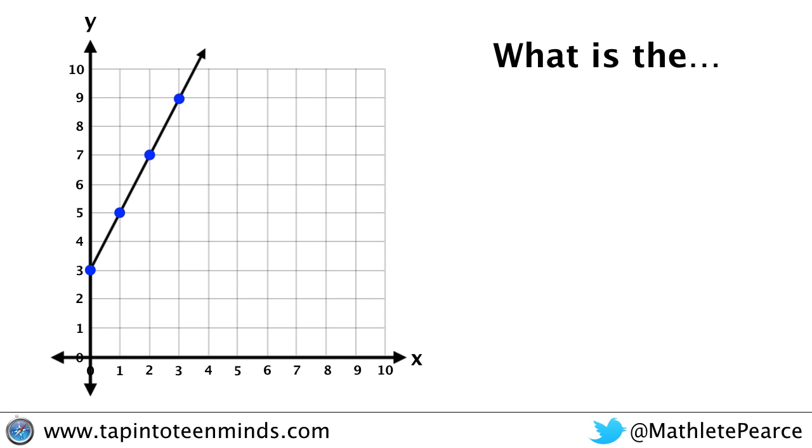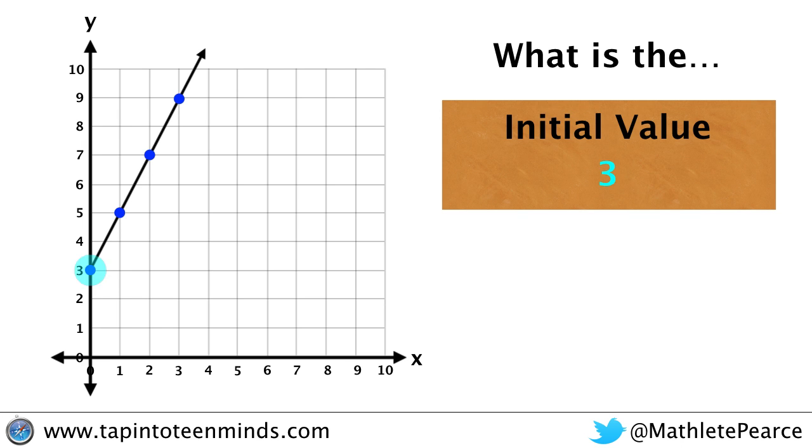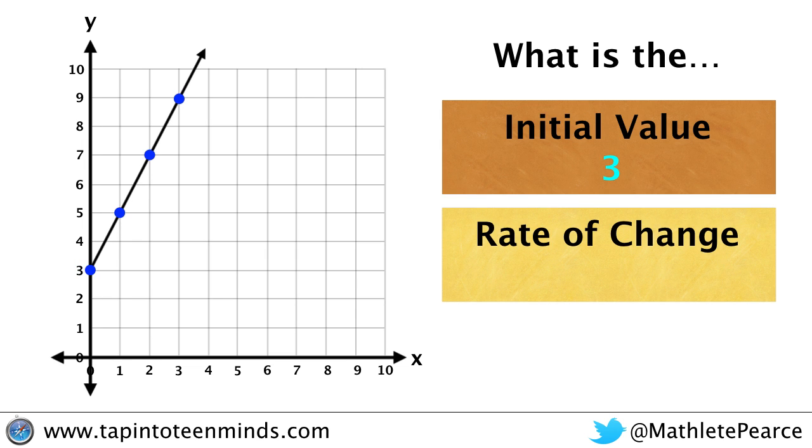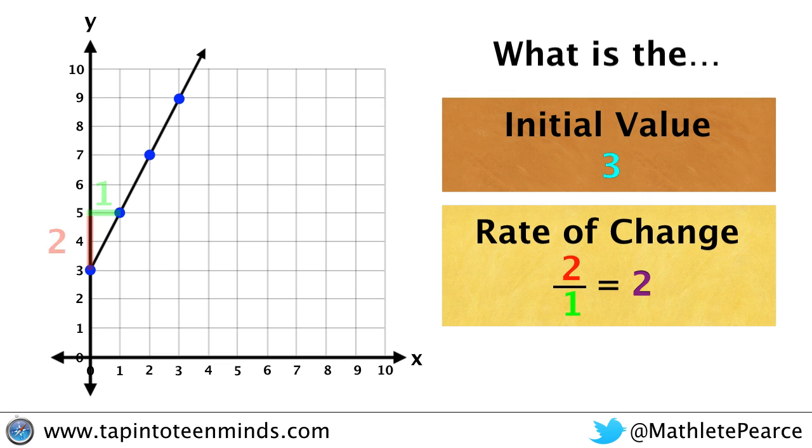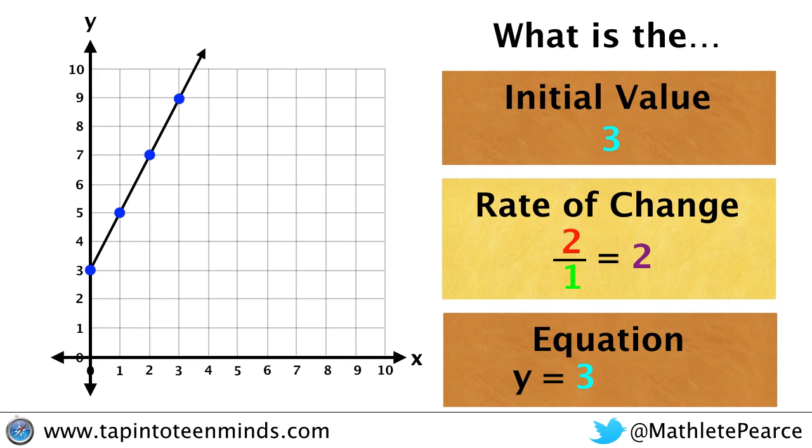Let's learn about what the equation would be for this particular example. Remembering that our initial value was starting at three and our rate of change when we did rise over run was two over one, we can sub this into our formula for a linear equation. If I want to find the value of y, we can start at three and add two x times. If I want to find the value of y when x is 10, I would sub in 10 for x. I get two times 10 which is 20 and I add the initial value of three so that would be 23.